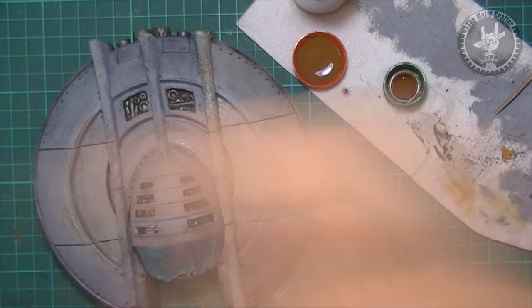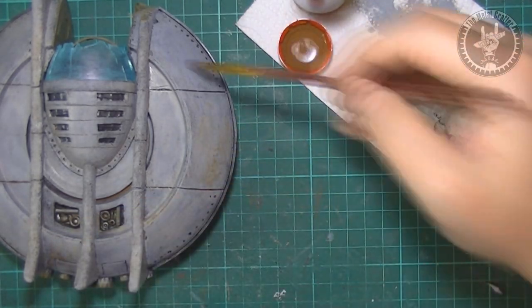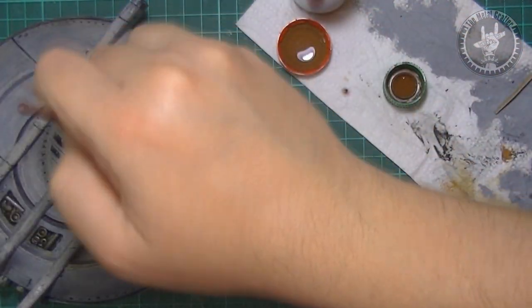I made a dark brown wash and added to the whole ship. Once dried, I dry brush with gunmetal, especially on the edges.